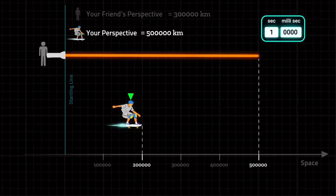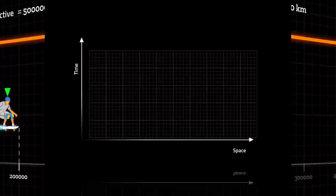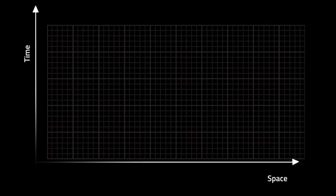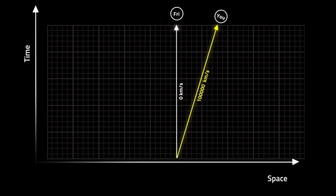Nothing is wrong here. If we look at the space-time diagram we can understand exactly how it works. Imagine you are traveling at a constant velocity of 100,000 kilometers per second and your friend is stationary. From your friend's perspective, you are traveling at 100,000 kilometers per second and light travels at 300,000 kilometers per second at a 45-degree angle. Nothing wrong here.